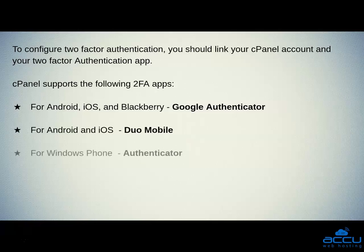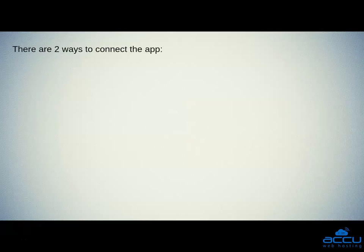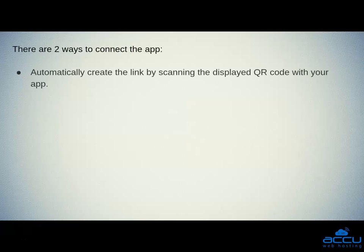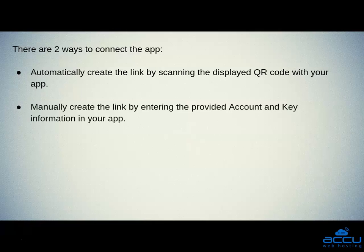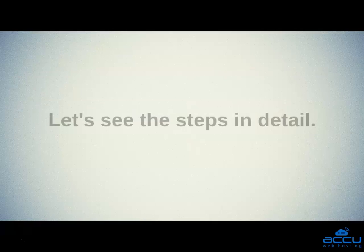For Windows Phone Authenticator is also supported. There are two ways to connect the app. First, automatically create the link by scanning the displayed QR code with your app. Second, manually create the link by entering the provided account and key information in your app.